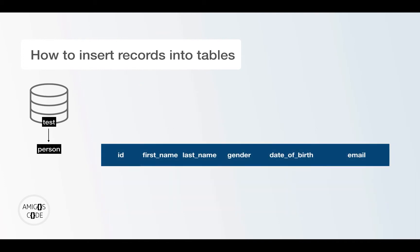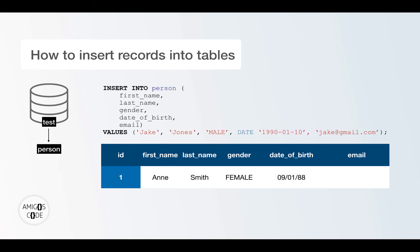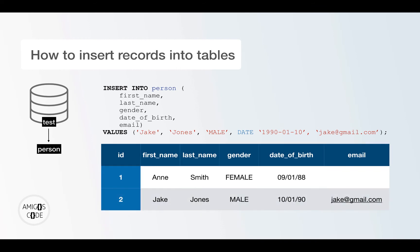Now let's say that we want to insert a second record into this table, i.e. a second person. So we write INSERT INTO person — the actual table name. The columns we will insert to are first name, last name, gender, date of birth, and in this case, this person has an email, so we also specify the email column. Then we pass all the values: Jake Jones, male, and the date of birth — year 1990, month January, day the 10th. Once we execute that command, we will get a new person with an ID of two in our database.